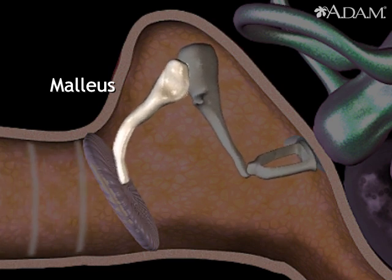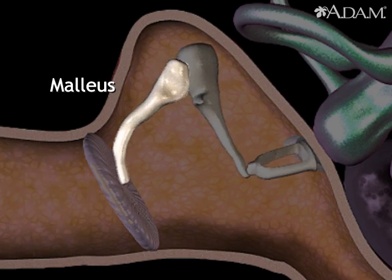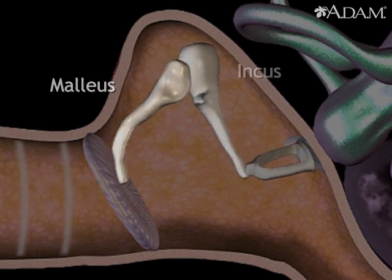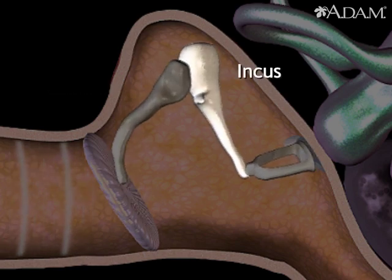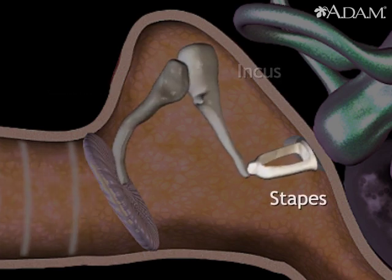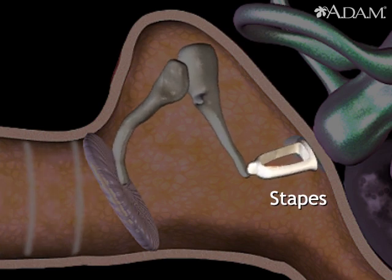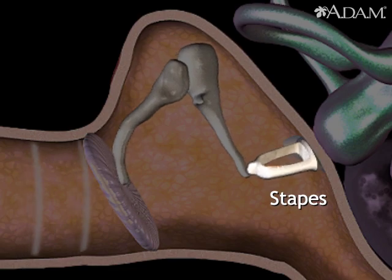Also called the hammer, the malleus transmits sound vibrations to the incus, which passes them to the stapes. The stapes pushes in and out against the structure called the oval window.